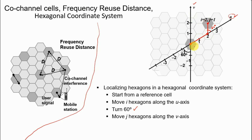Why do we use the u-v axes rather than standard x-y axes? If we moved along a standard axis, we would be splitting cells and sitting at the edge of two cells, which would complicate things. Using the u-v axes — which cross the centers of cells along each axis direction — avoids this problem.